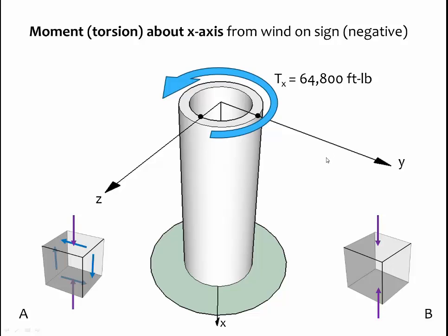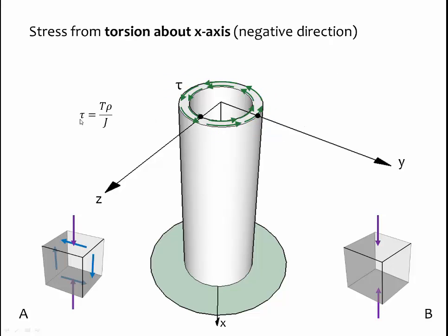The stress equation associated with this torque gives a shear stress equal to the internal torque times rho divided by J, our polar moment of inertia. The stress distribution is shown with green arrows. The stress is in the direction of the torque; it's greatest at the outside of the pipe where rho is at its largest, and it decreases linearly towards the center. That means at point B the shear stress will be the greatest, and at point A it will be something less, because the rho value will be less.